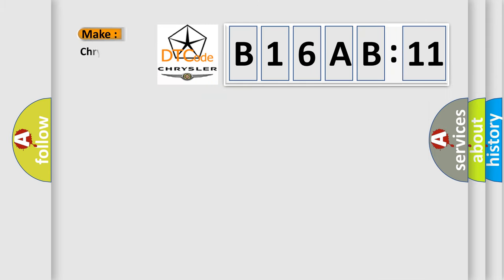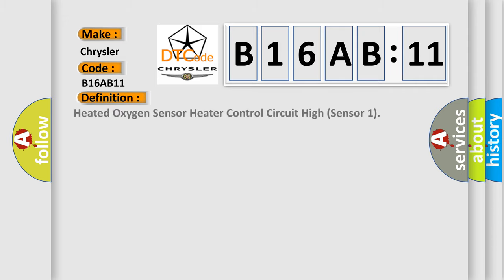So, what does the diagnostic trouble code B16AB11 interpret specifically? Chrysler, car manufacturer. The basic definition is Heated oxygen sensor heater control circuit high sensor 1. And now this is a short description of this DTC code.